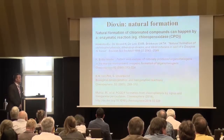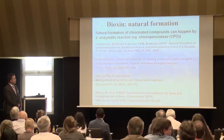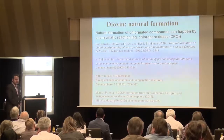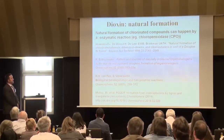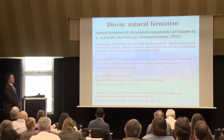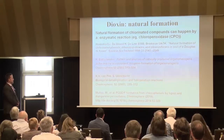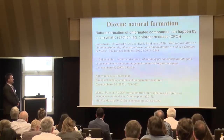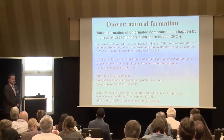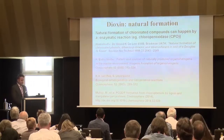Looking at natural dioxin formation, there are different pathways. Besides bushfires, you can have enzymatic reactions like chloroperoxidase. Generally, organohalogen compounds can be formed by various biogenic ways. For example, a 2014 work by Muñoz describes formation from chlorophenols, bilirubin, and manganese peroxidase. But usually the dioxin concentrations obtained from these natural biotic reactions are quite low.